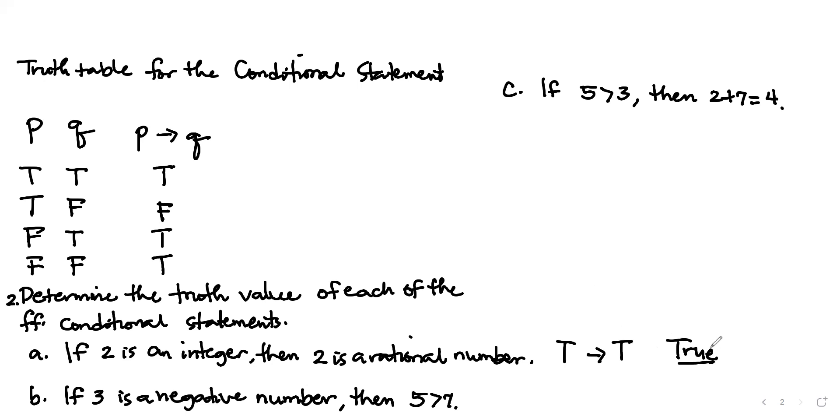Next, if three is a negative number, then five is greater than seven. Our consequent is five greater than seven. You know that five is less than seven, so it's false. Therefore, if P and Q are both false, then it is true. The truth value is true.